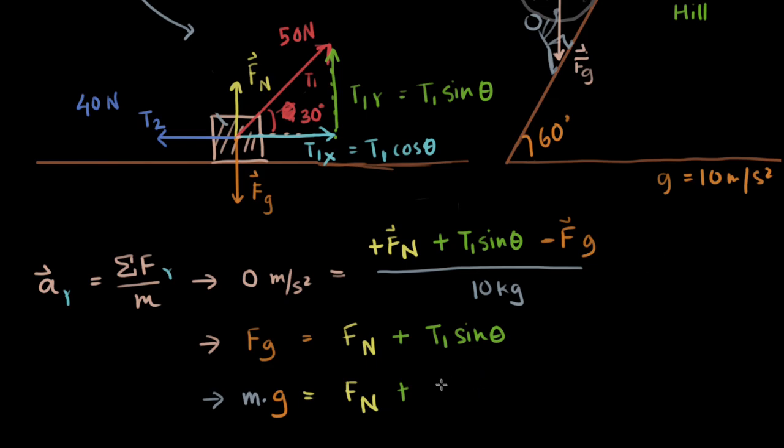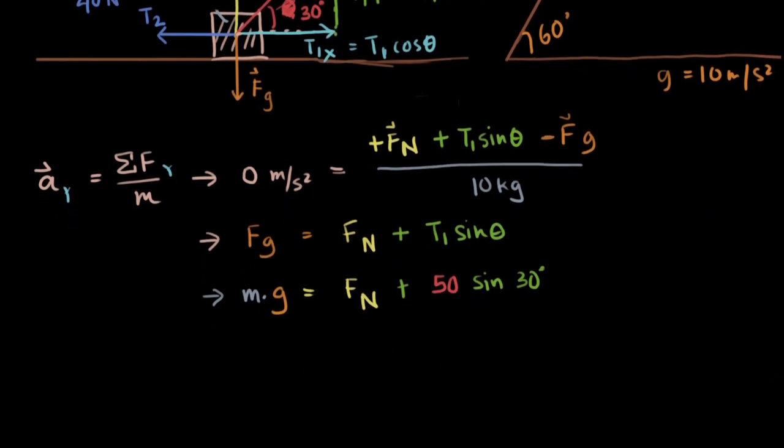50, we'll write that with the red color. And we have the sine theta, which is sine 30 degrees. What is our mass? Our mass is obviously 10 kg.